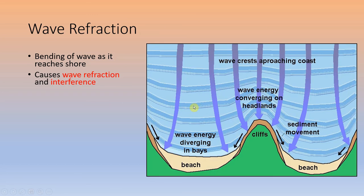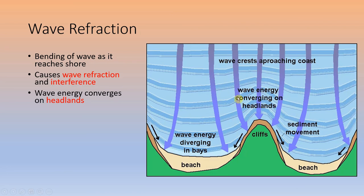When energy is spread and dissipated in bays, sedimentation occurs, while erosion happens at the headlands. Over time this erodes the headlands back and builds the bays out, evolving toward a smooth, straight coastline like the Atlantic seaboard. Wave interference occurs when two waves interact — constructively adding to each other (possibly producing rogue waves) or destructively canceling each other out.